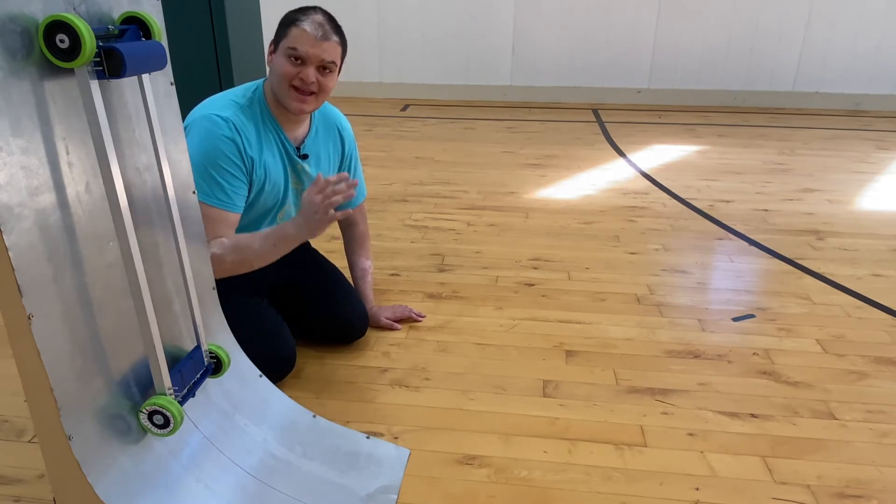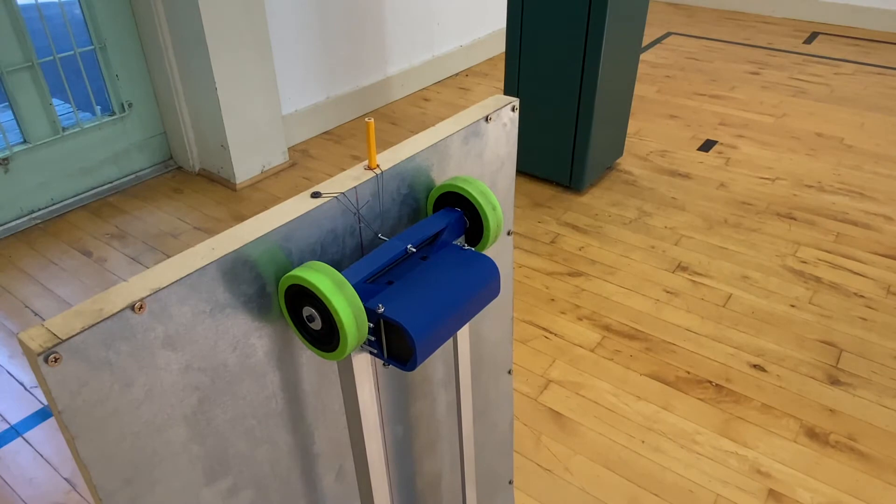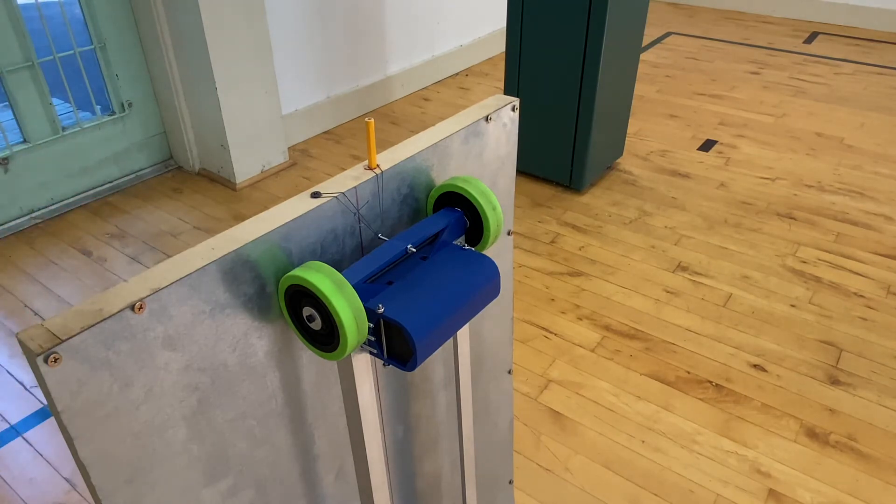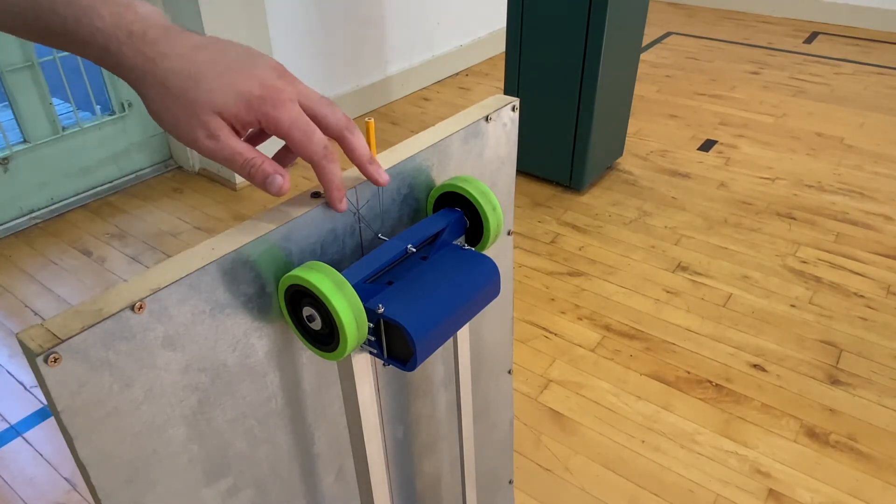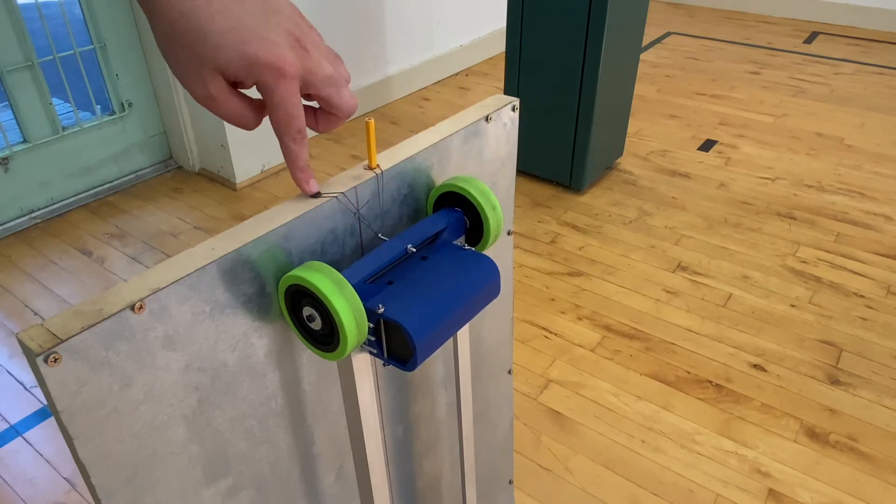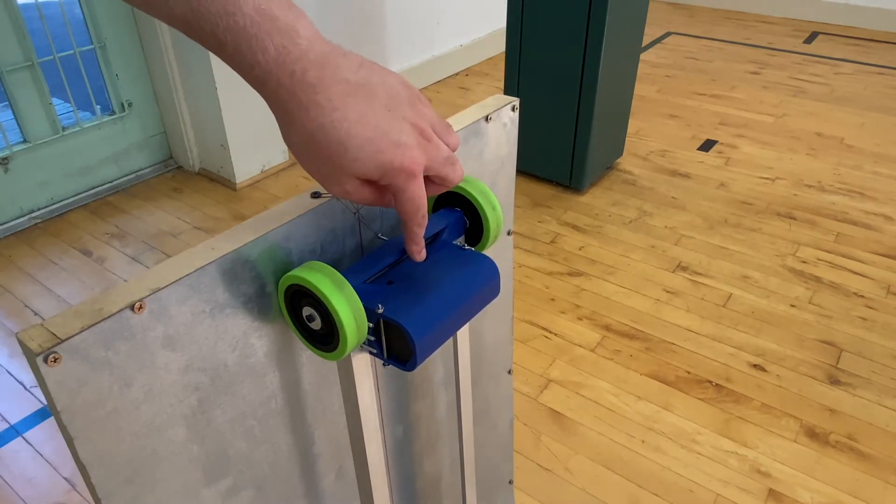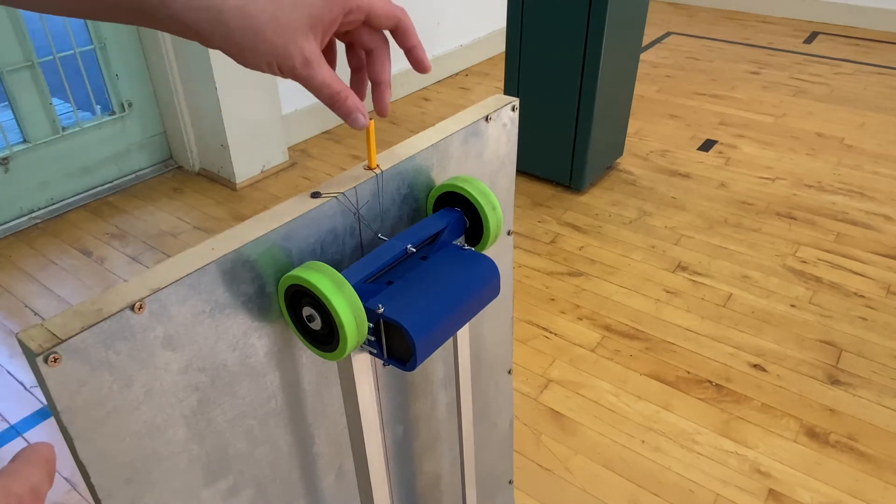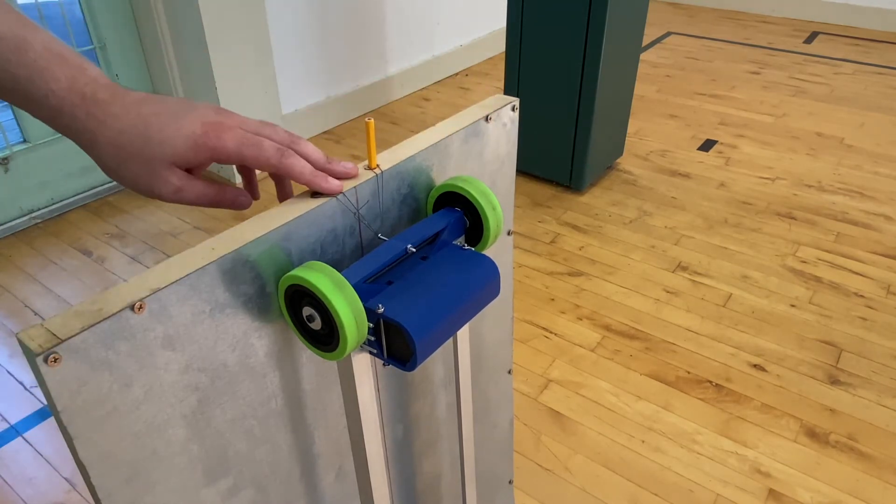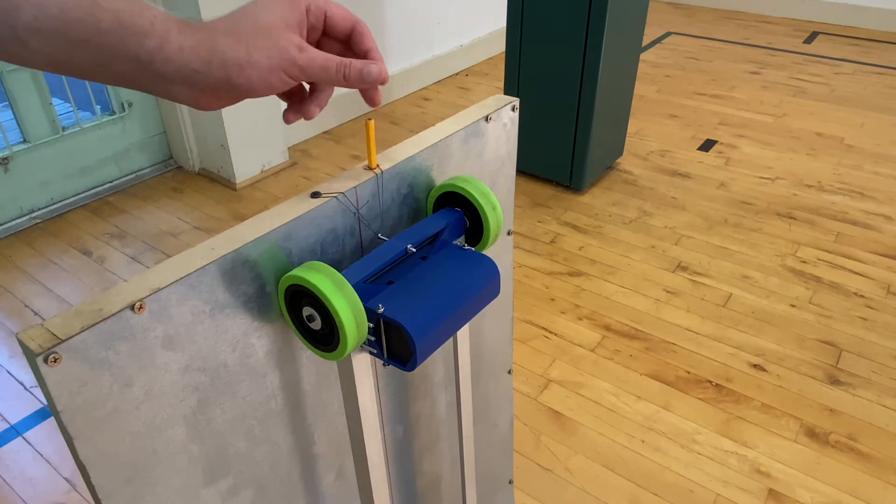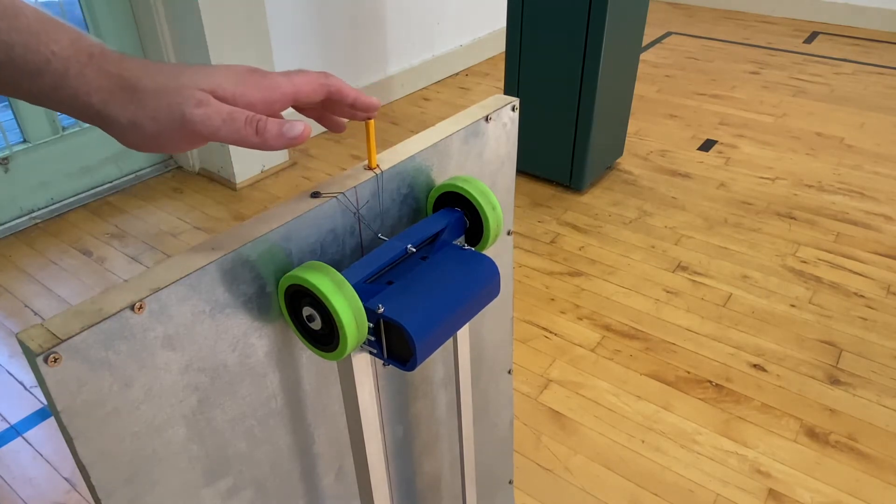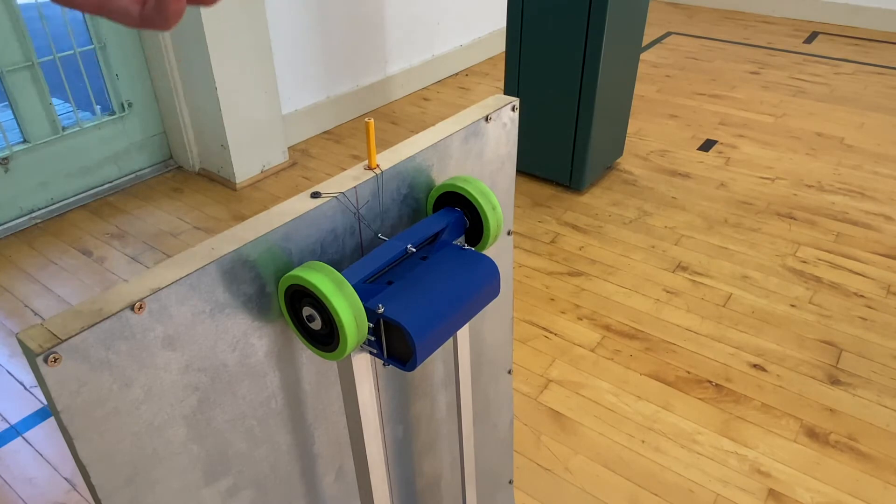What you're looking at right now is the releasing mechanism that I found to be the easiest to implement and the most consistent you can use. Basically, all you need are three different things: a loop of string, a screw, and a bolt on your vehicle. Then you just have to drill a hole onto your top platform of your ramp, and obviously you have a pencil right here, which they will provide you in the events as stated in the gravity vehicle rules.